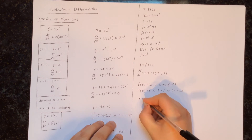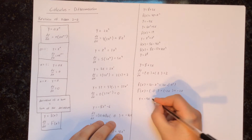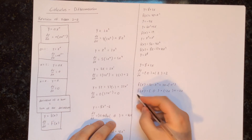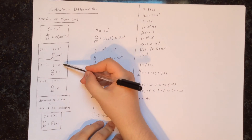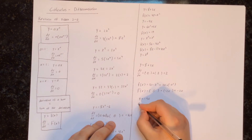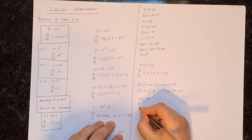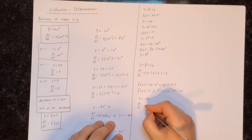Next, the derivative of y equals minus 9x. This is a number in front of x, so dy/dx equals just that number: minus 9.